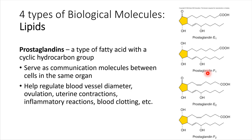Yet another type of lipid is the prostaglandin. Prostaglandins are used as communication molecules — messenger molecules that can be used between cells. They're a relatively quick form of communication that doesn't require waiting on a lot of circulation; it's a quick signal sent from one cell to another nearby cell. Prostaglandins help to do things like regulate blood vessel diameter, which is very important when it comes to controlling blood pressure. They also come up in blood clotting and other places we'll learn about.